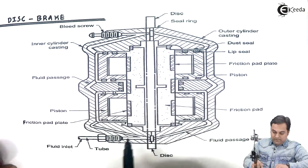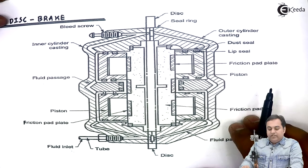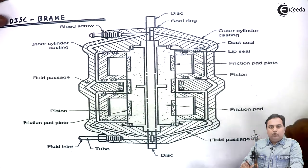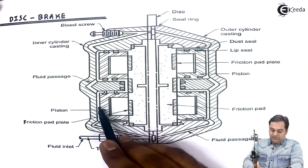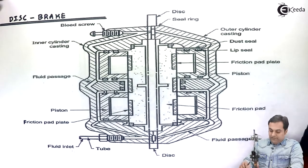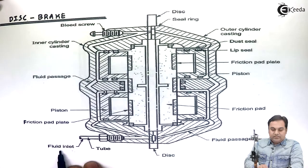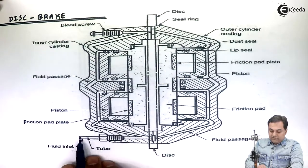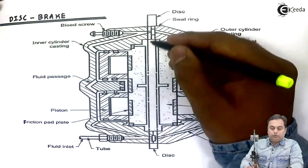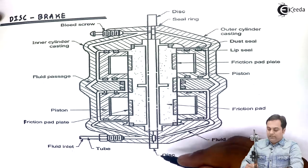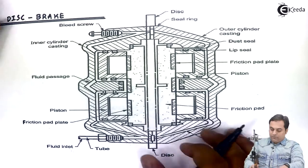After that we have one outer cylinder casting, or we can say the casing here. Inside this is the outer cylinder, inside which we have another inner cylinder. Then we have fluid passages. Even disc brakes when operated in automobiles use oil as a medium to transfer the force, so for the passage of oil there are fluid passages given here — through these channels the oil would be flowing. Then we have the fluid inlet, meaning from this region the oil would be entering into the system. Next, this is the disc which we want to stop.